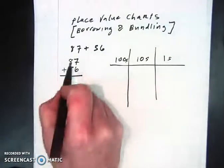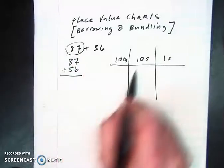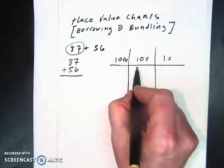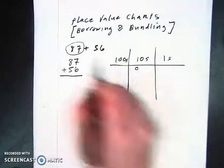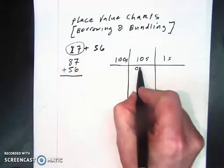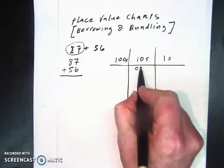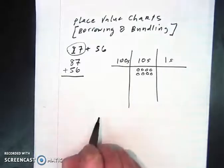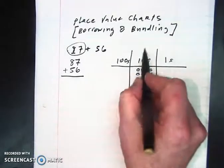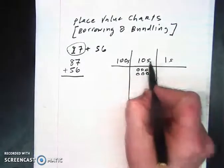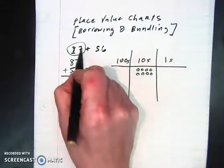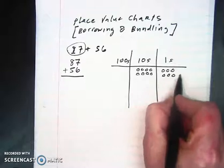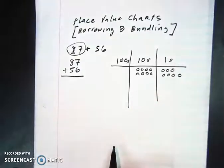So we're going to start out. The first thing that we need to do is we need to load up our place value chart with 87. So we're going to add 8 10s in the tens placement, because any time we see 8 10s, we need to think 80. And then 7 1s: 1, 2, 3, 4, 5, 6, 7. So we have our 7 1s.